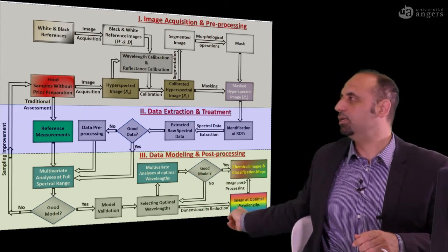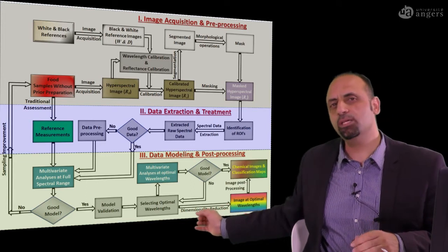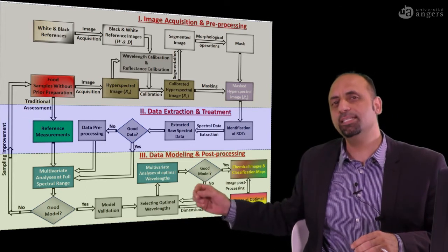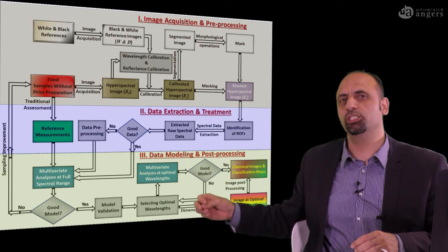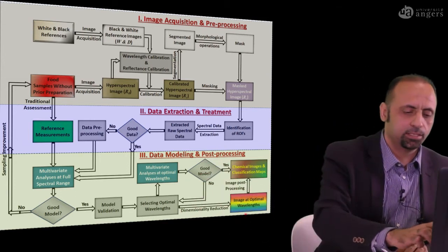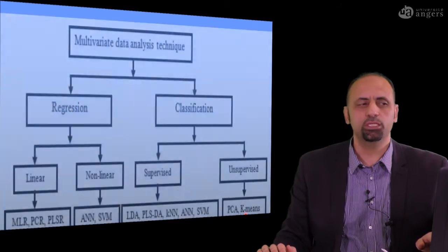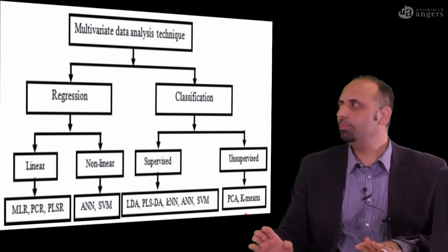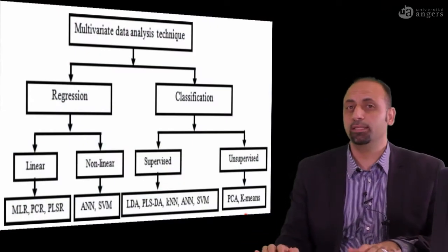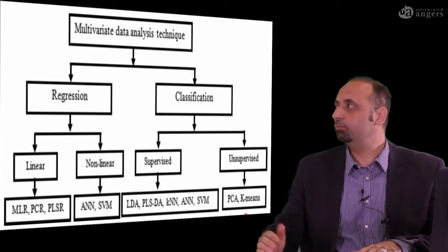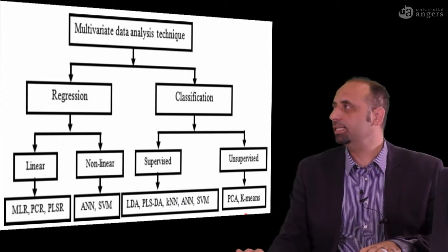Finally, you can build, as you see here, chemical images. Chemical images means you can see chemical information that you are unable to see with your naked eyes. To develop this kind of classification and chemical imaging, you need to be equipped with some information and background about multivariate data analysis techniques.